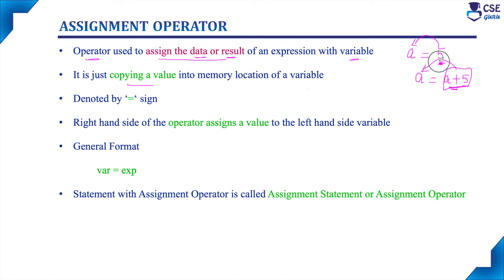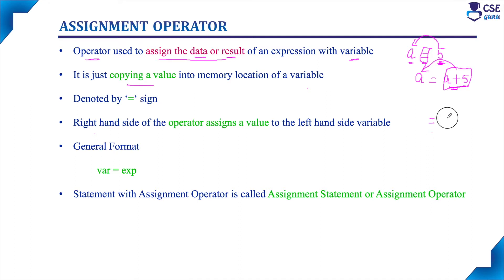The value 5 will be copied to the memory location of variable a. The assignment operator is denoted by the equal sign. The right-hand side of the operator assigns a value to the left-hand side variable. The general format is: variable = expression. We can give a value or any expression on the right-hand side.